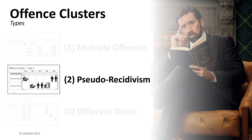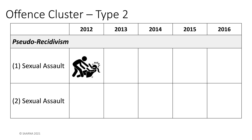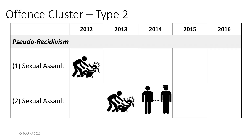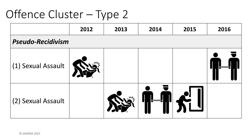We consider charges to be pseudo-recidivism when a person is re-arrested but has not committed a new offense since their release. Imagine a situation like Bill's from before: one offense takes place in 2012 and another in 2013. The individual is only charged with one of the two offenses in 2014, is released in 2015, but is subsequently re-arrested in 2016. The 2016 re-arrest is pseudo-recidivism, not true recidivism, because it was for the 2012 offense. The individual did not commit a new offense after his release. We would treat both offenses as being part of a single cluster, because at no time did the person choose to re-offend after being identified, sanctioned, and released by the criminal justice system.